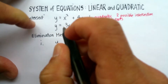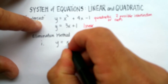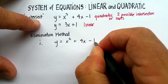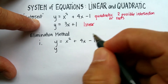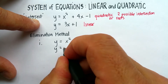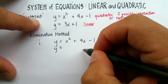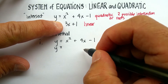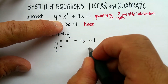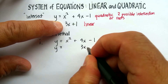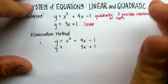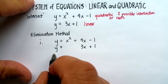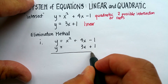Here's the quadratic on top: y is equal to x squared plus 4x minus 1. Then the linear equation: y is equal to 3x. I'm going to line up the 3x linear term with the linear term in the quadratic, so I'll rewrite it as 3x plus 1. There's no squared term — no quadratic term — in the linear equation.